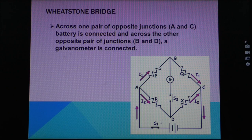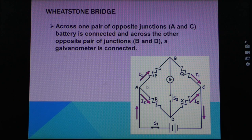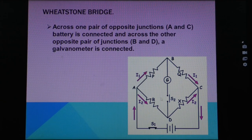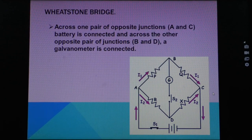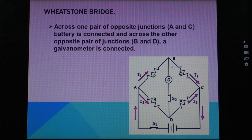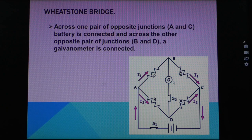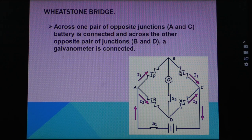There are two pairs of junctions: A and C, and B and D. A battery is connected across junctions A and C. Across the other pair of junctions B and D, there is the galvanometer, which is used to check the presence of electric current. When the galvanometer deflects, that shows the presence of electric current.